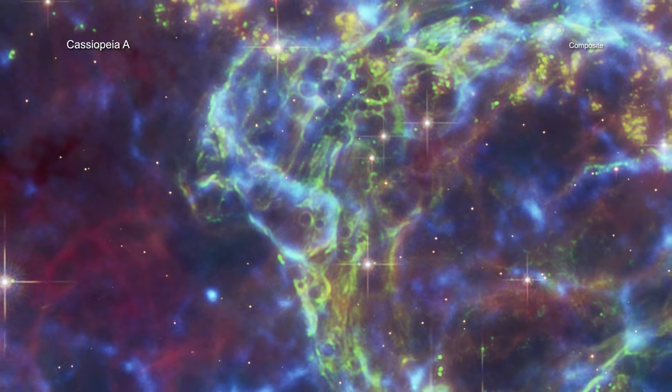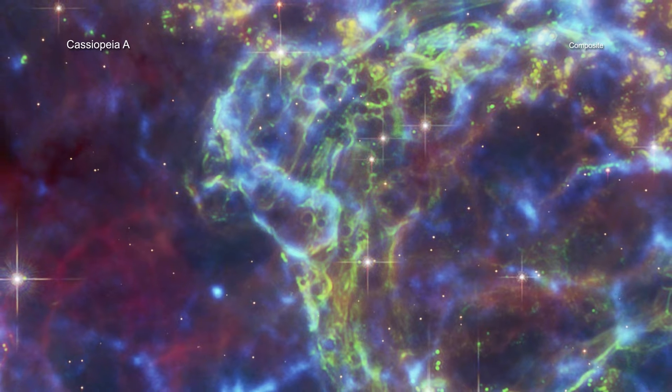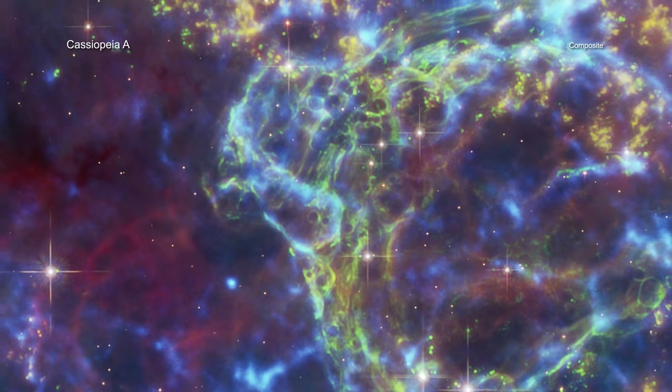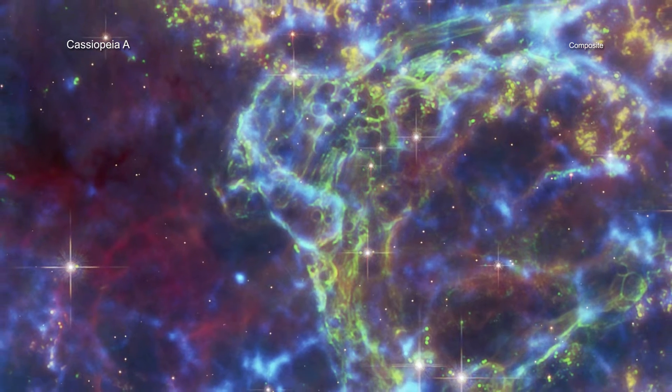Uses data from the Chandra X-ray Observatory and James Webb Space Telescope. It includes the first image of Cas A combining data from both telescopes.